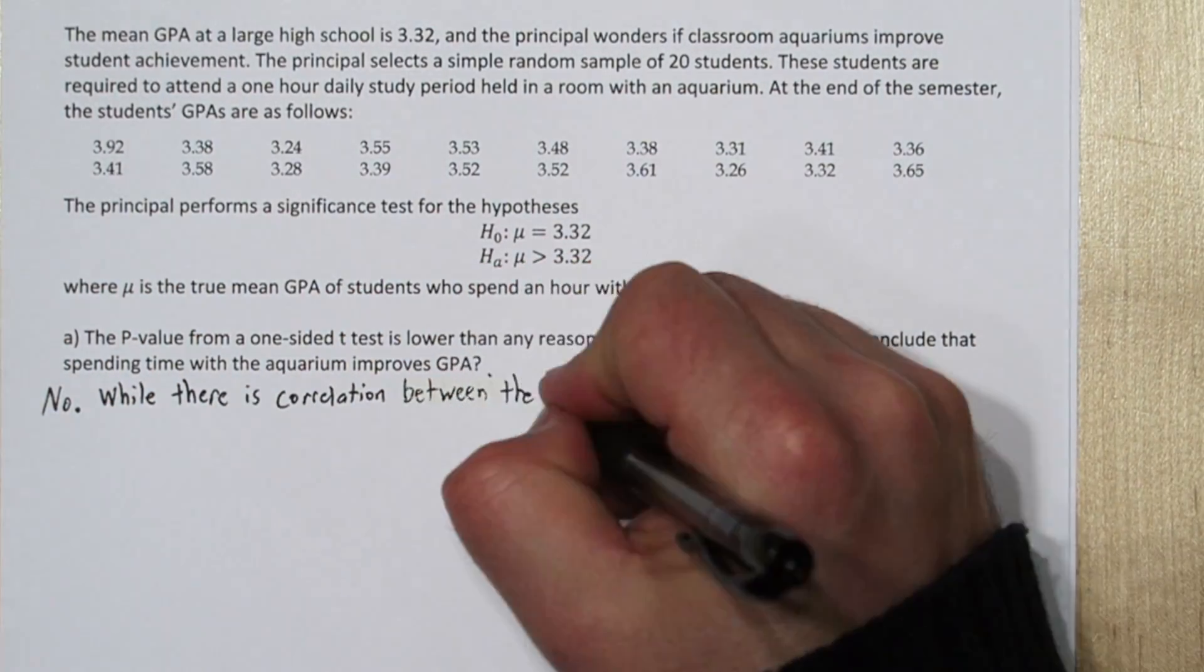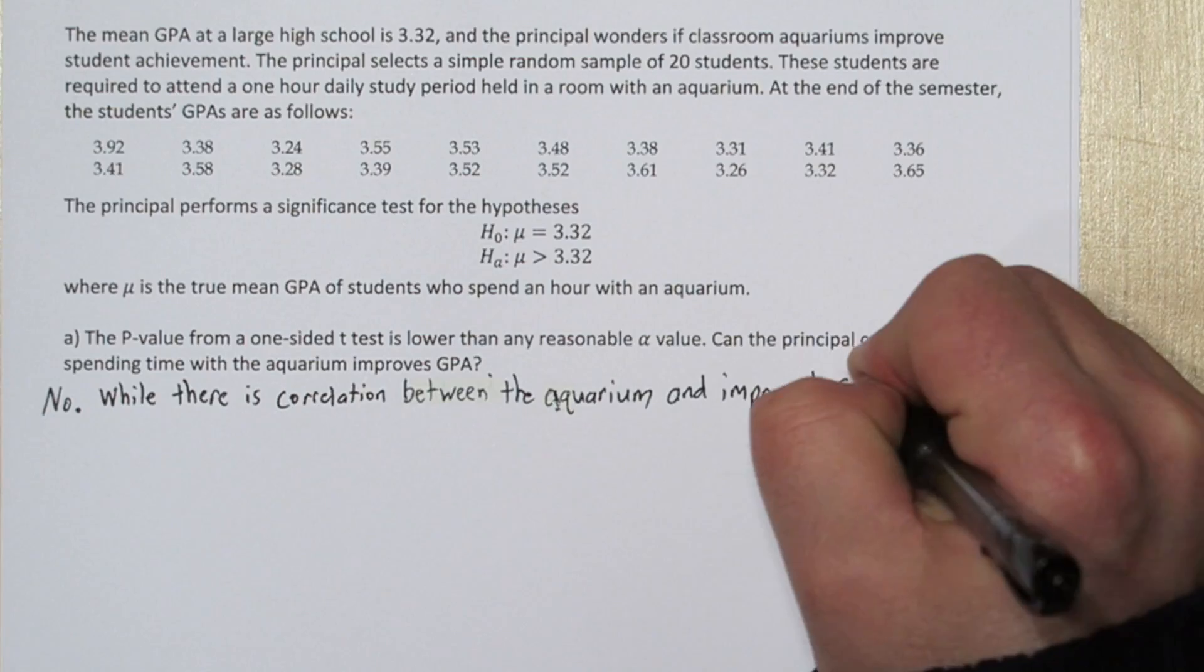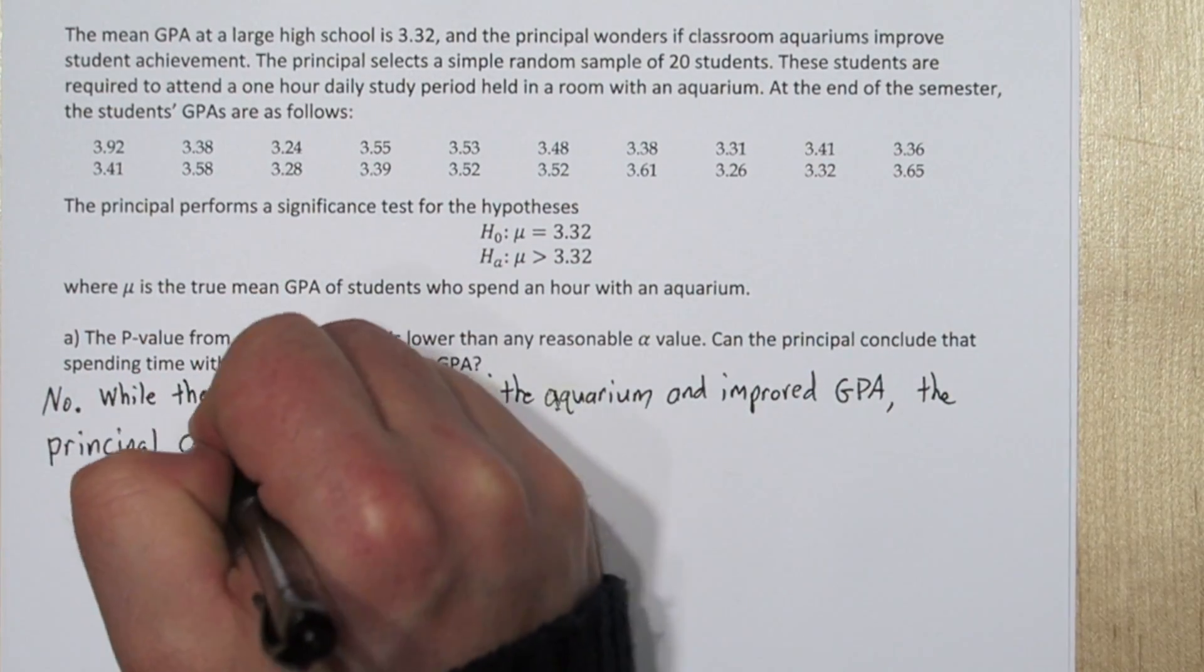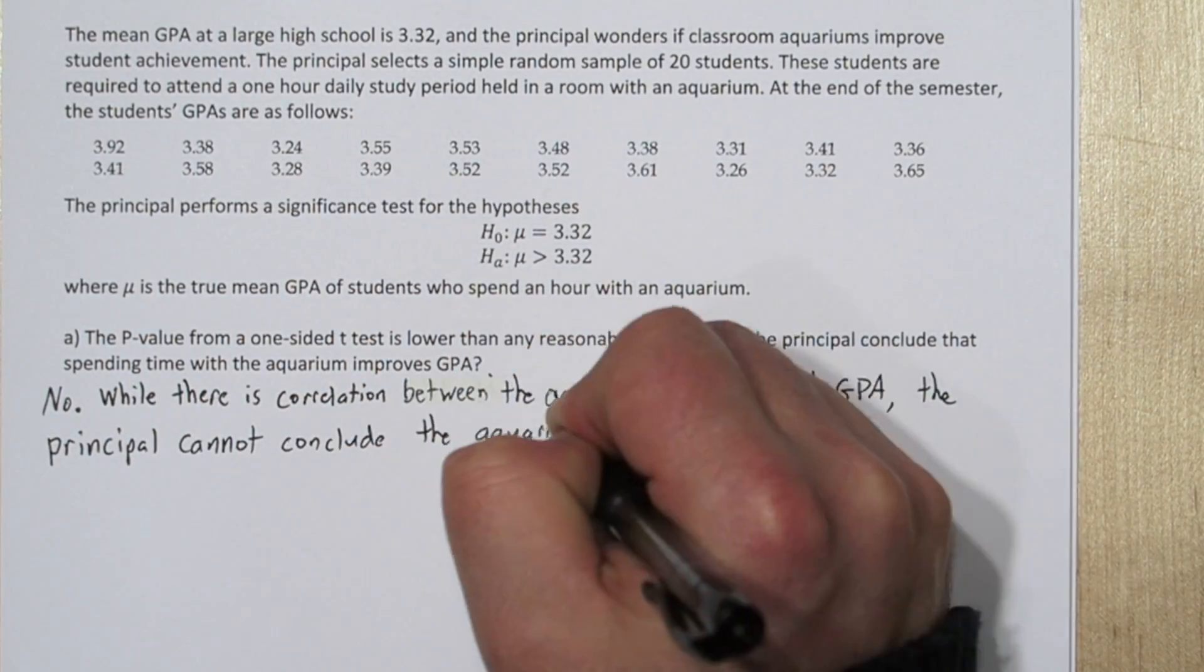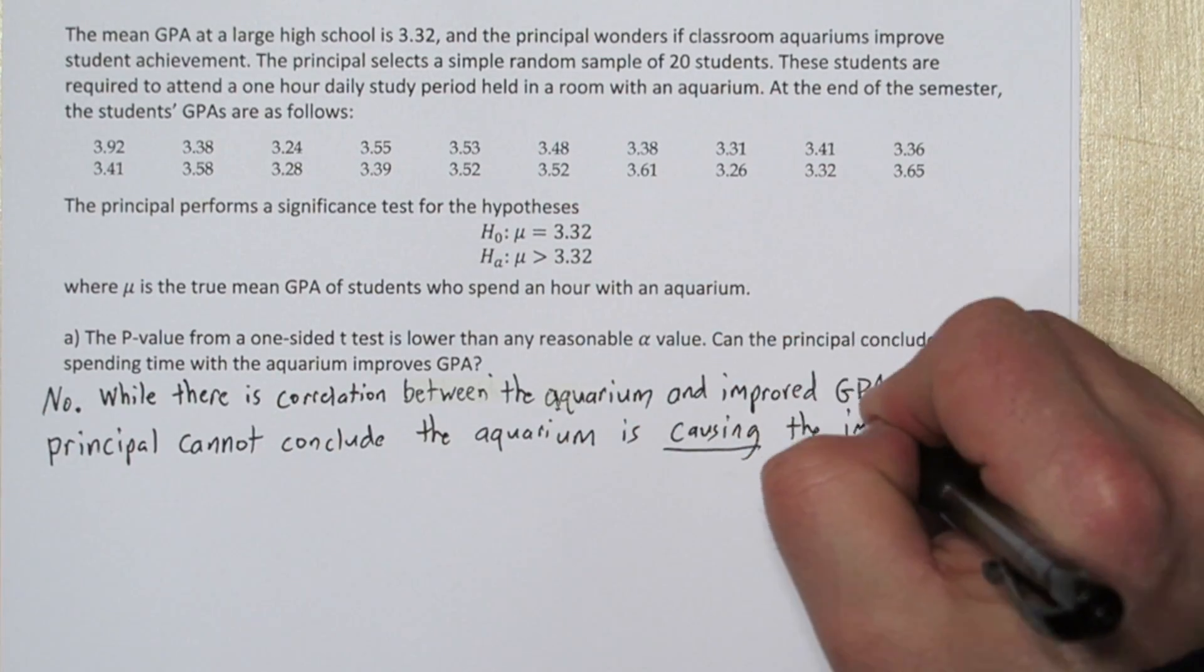That low p-value shows there is correlation between the aquarium and improved GPA, but we have to say no, the principal cannot conclude the aquarium is causing the improvement.